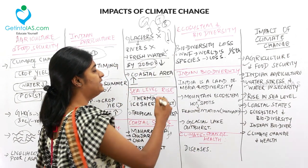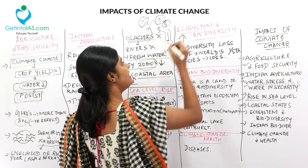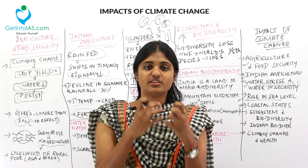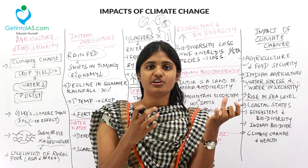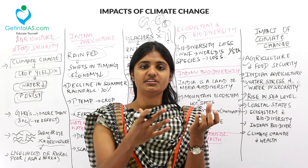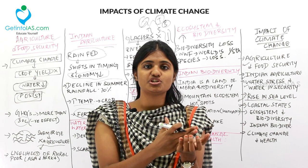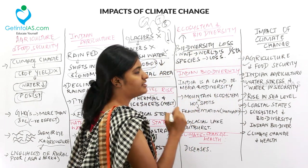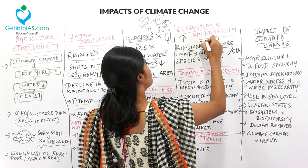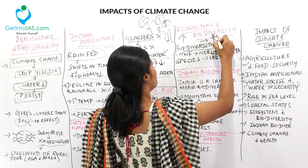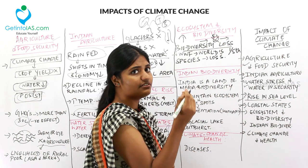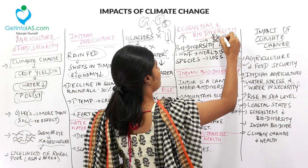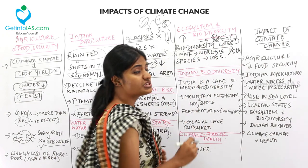Moving to Ecosystem and Biodiversity. Due to the increase in temperature from climate change, various organisms cannot sustain the varying conditions and face extinction. Biodiversity loss will occur as a result. If one organism in a food chain becomes extinct, all other connected organisms are also affected, leading to a cascading biodiversity loss.